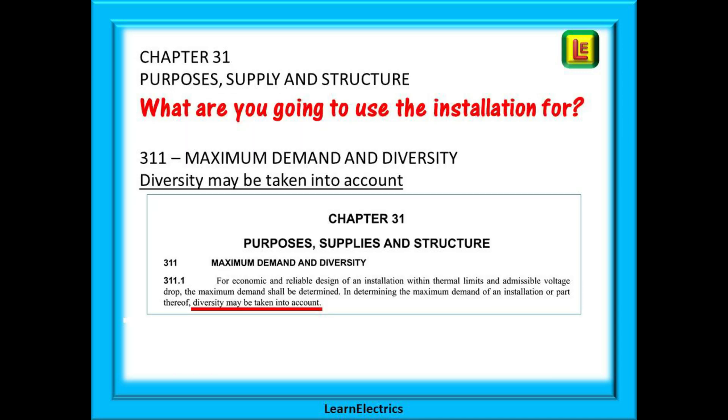Chapter 31 is the biggest chapter and as well as lists it has many drawings that you need to understand. Chapter 31 is all about what the installation is going to be used for. The maximum demand, how many phases, the earthing system, circuit breakers and types of circuits.